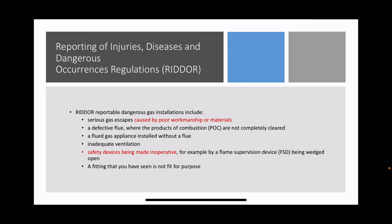If an appliance has been fitted but there's inadequate ventilation in the room - again, bad workmanship from somebody not trained. Where you find safety devices that have been made inoperative or bypassed, for example a flame supervision device being wedged open, untrained people will do a little fix by breaking or bypassing the safety device. You need to let RIDDOR know because there's somebody out there doing this who could cause somebody to die.